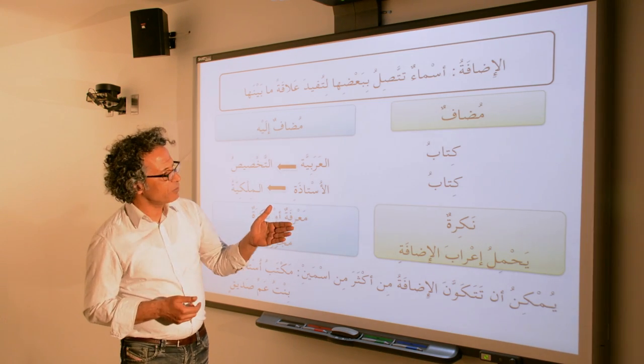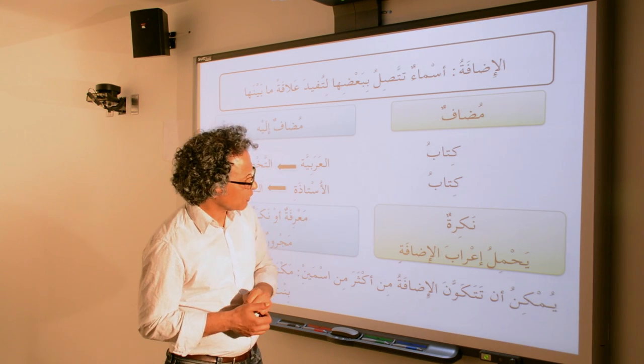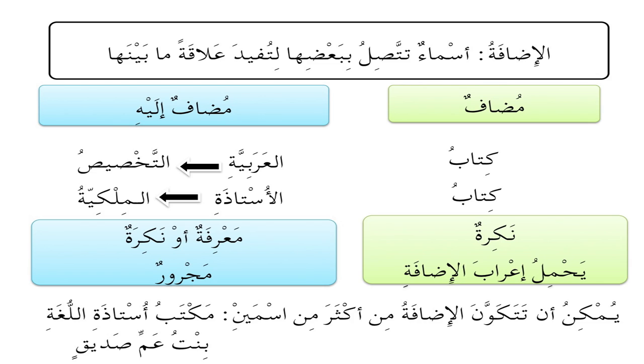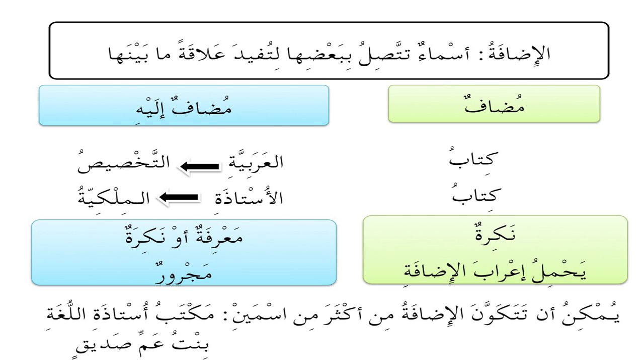Now in إضافة, the مضاف does not take the alif and lam, and it carries the voweling (إعراب) that determines the role of the entire إضافة in the sentence. The مضاف إليه can be definite or indefinite — معرفة أو نكرة — and it is مجرور, meaning it takes a كسرة at the end.